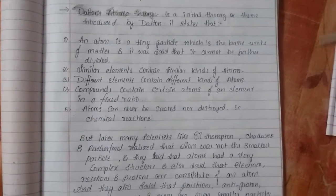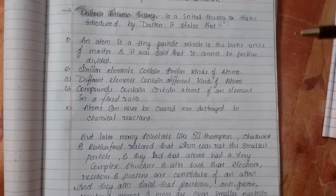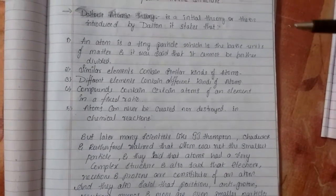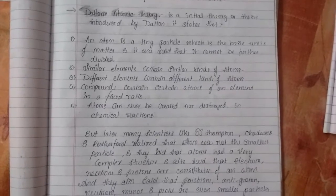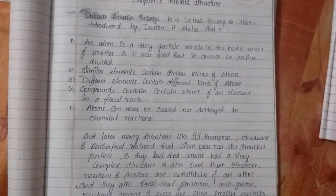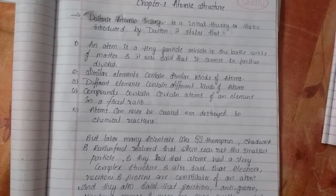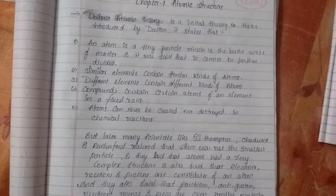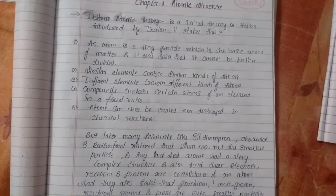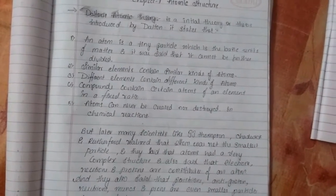Similarly, he also said that many elements of similar kind contain similar atoms and different elements of different types contain different kinds of atoms. And he also stated that compounds contain certain amount of atoms in a fixed ratio. And he also said that atoms can never be created nor destroyed in chemical reactions. They can just be formed into different matters or forms.